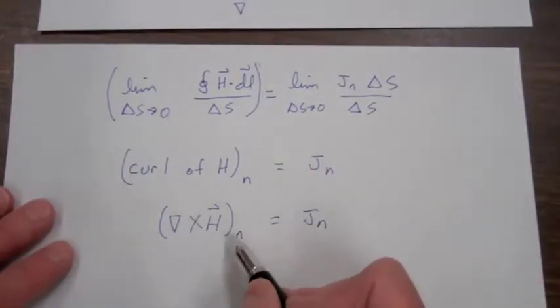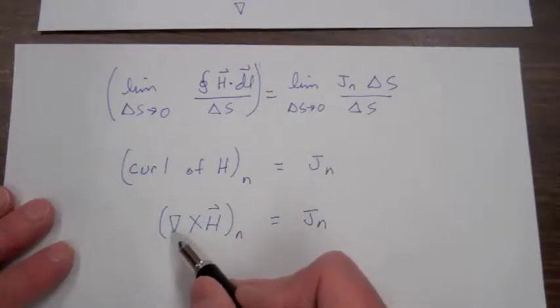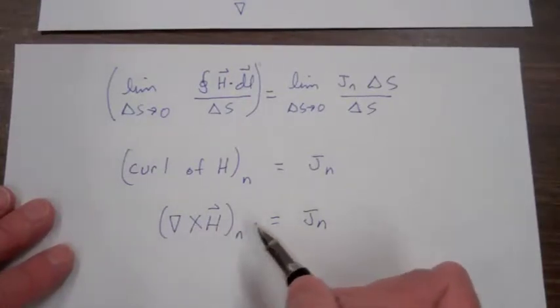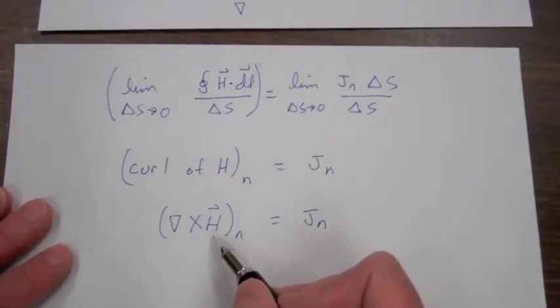And later on in part two, we'll understand this nomenclature of del cross H representing the curl of our vector H.